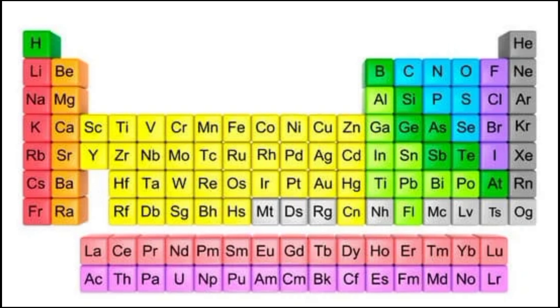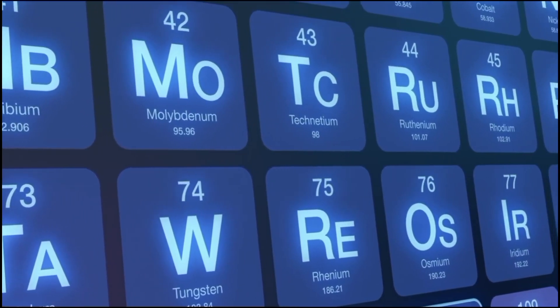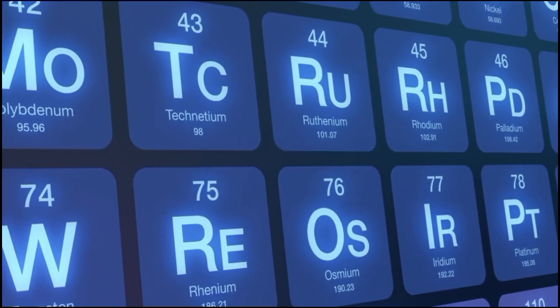The periodic table is divided into several blocks based on the type of atomic orbital being filled by electrons. The S block: the first two groups (hydrogen and helium are exceptions) belong to the S block. Elements in this block have their outermost electrons in the S orbital.